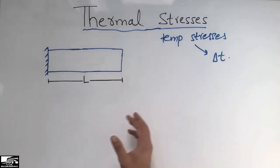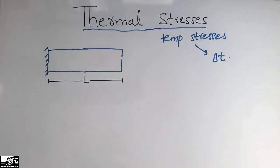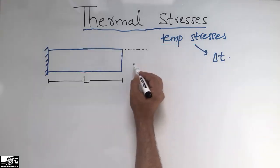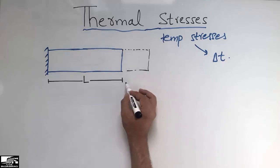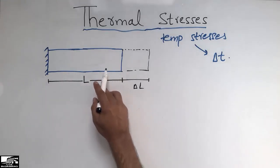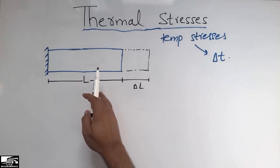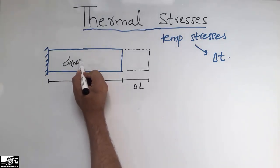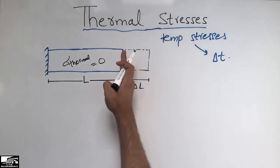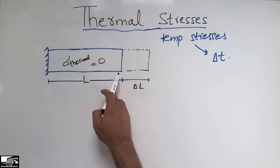When we decrease the temperature, the length of an object decreases — it contracts. Now, consider this object of length L. If we increase its temperature, the length will increase by delta L. In this case, one end is fixed while the other end is free, so the object expands to delta L on the free side. The thermal stress is zero in this object because there is no restraint on the right side to constrain the movement.